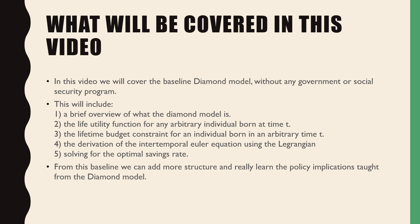This will include a brief overview of what the Diamond model is, the lifetime utility function of an arbitrary individual born at time t, the lifetime budget constraint for any individual born at an arbitrary time t, the derivation of the intertemporal Euler equation using the Lagrangian, and solving for the optimal savings rate.